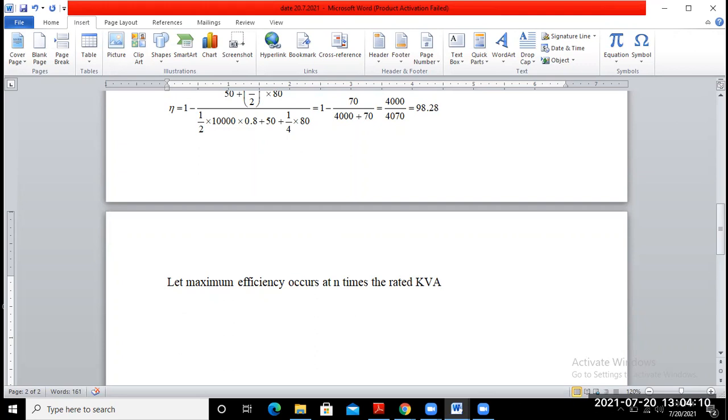So, ohmic loss at maximum efficiency occurs at n square times of the 80 watts. Ohmic loss at maximum efficiency equal to n square 80 watts.